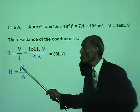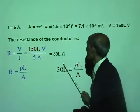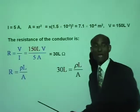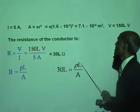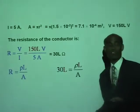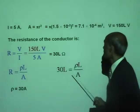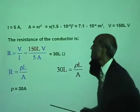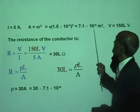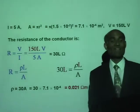Resistance is rho L over A in terms of length and area of cross-section. The resistance is 30 L, and if R equals rho L over A, we can say 30 L equals rho L over A. On either side, L will cancel — L has disappeared, we don't need the length. Therefore rho equals 30 A. Rho equals 30 times 7.1 times 10 to the negative 4, and that will be 0.021 ohm meter — that is the resistivity.